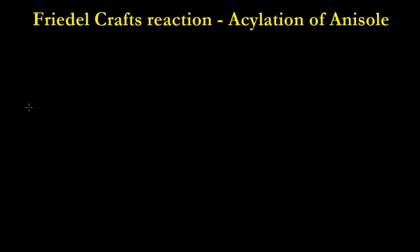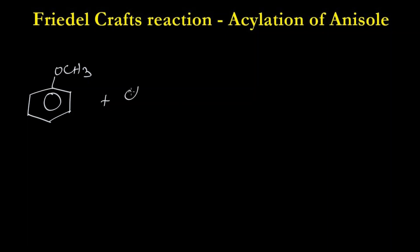Now we are going to learn the acylation reaction of anisole. Acylation means the addition of a CH3CO group to anisole. We are going to add acetyl chloride, CH3COCl, to anisole. The catalyst is anhydrous aluminum chloride.